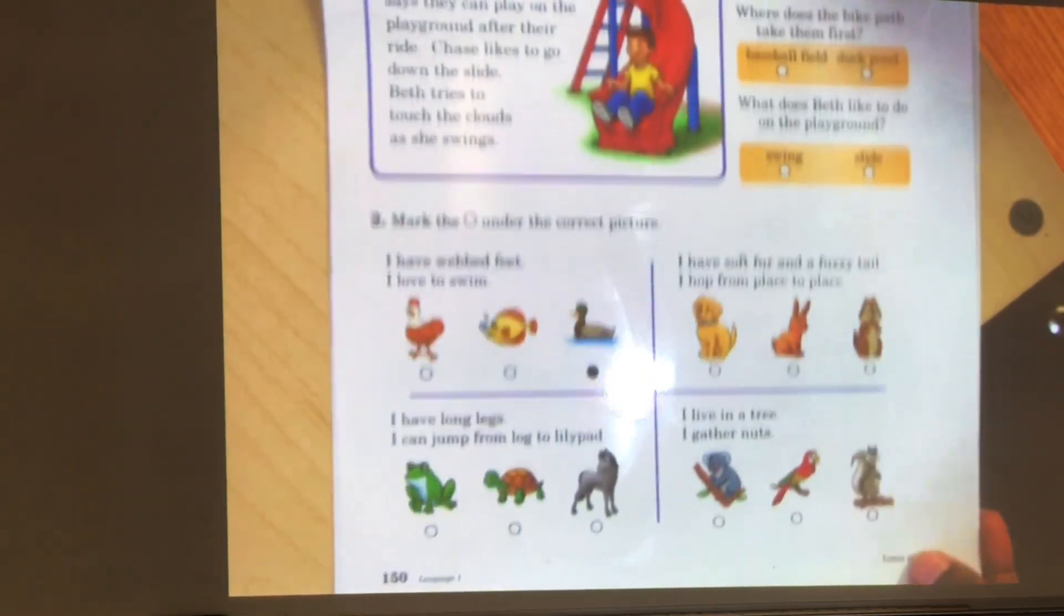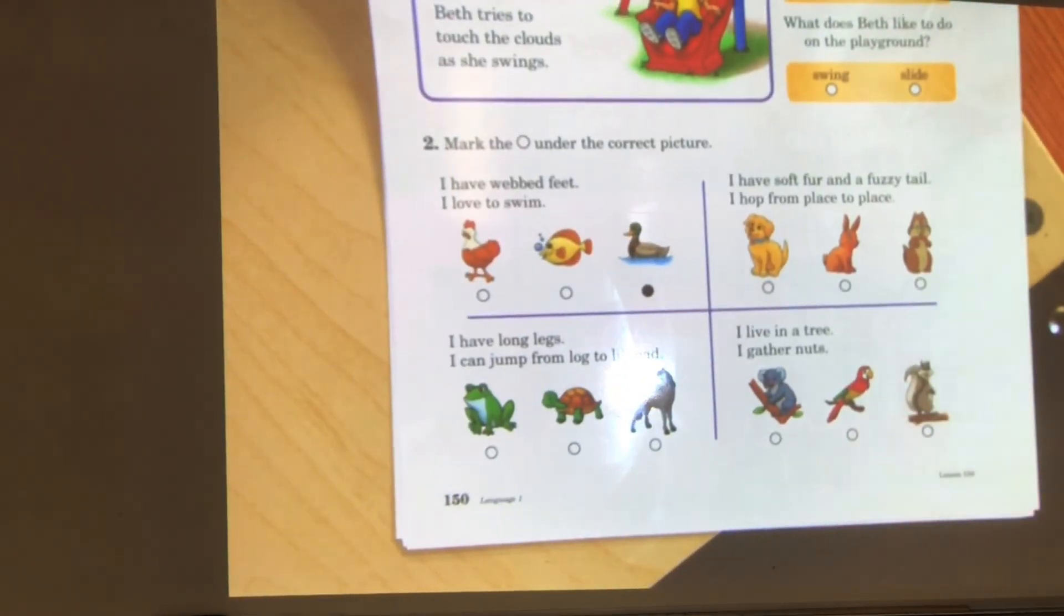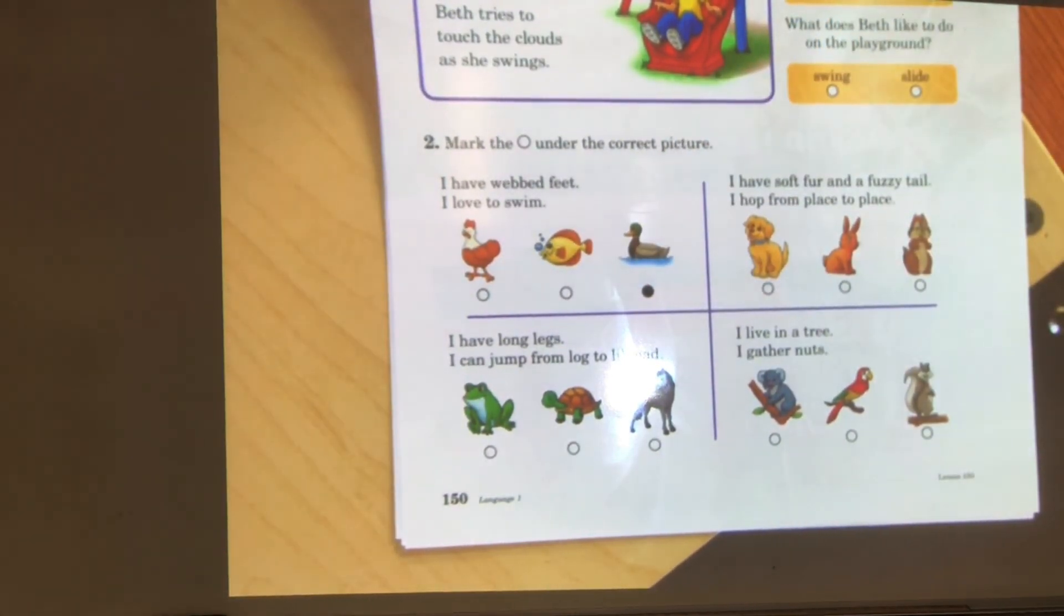Let's take a look at section two. Mark the circle under the correct picture. Read the riddle. I have webbed feet. I love to swim. Does a chicken have webbed feet? Do they like to swim? What about a fish? A fish likes to swim, but does it have webbed feet? No. A duck has webbed feet and it loves to swim. And as you can see, duck is marked. You'll read the other sections and complete the rest like that.